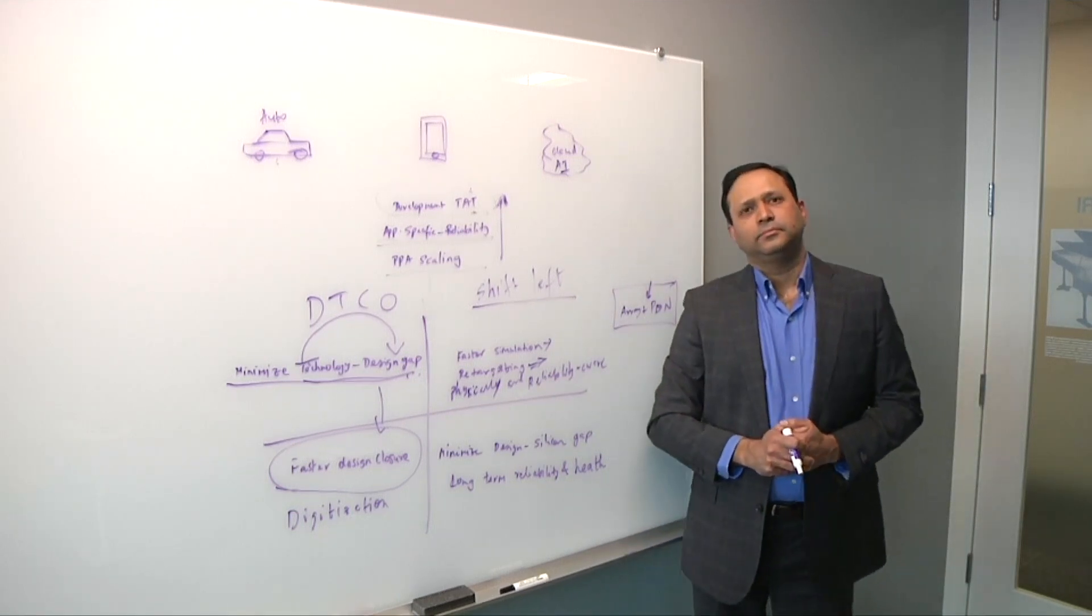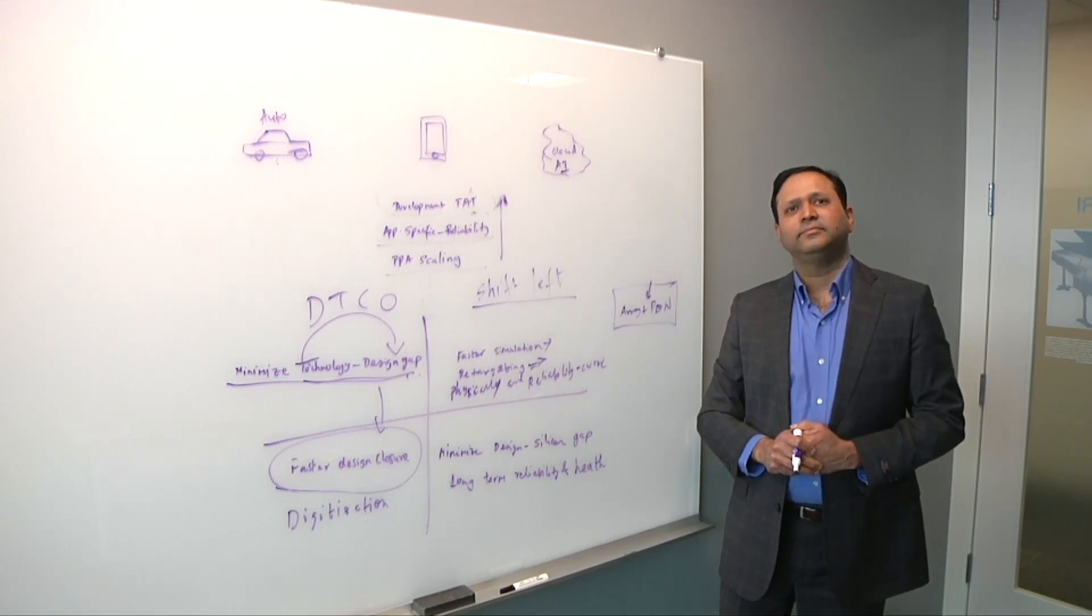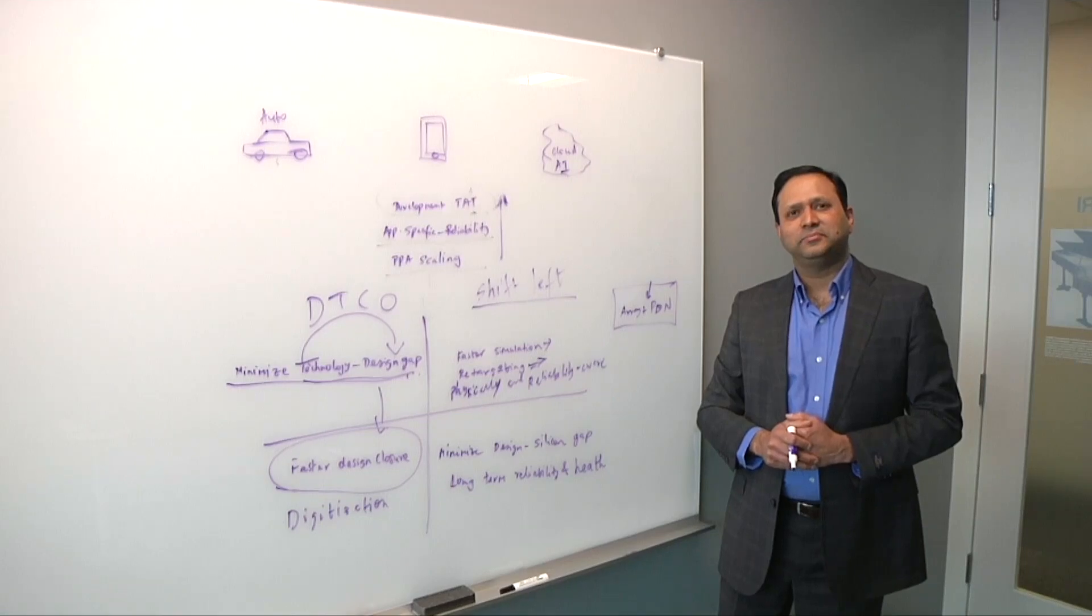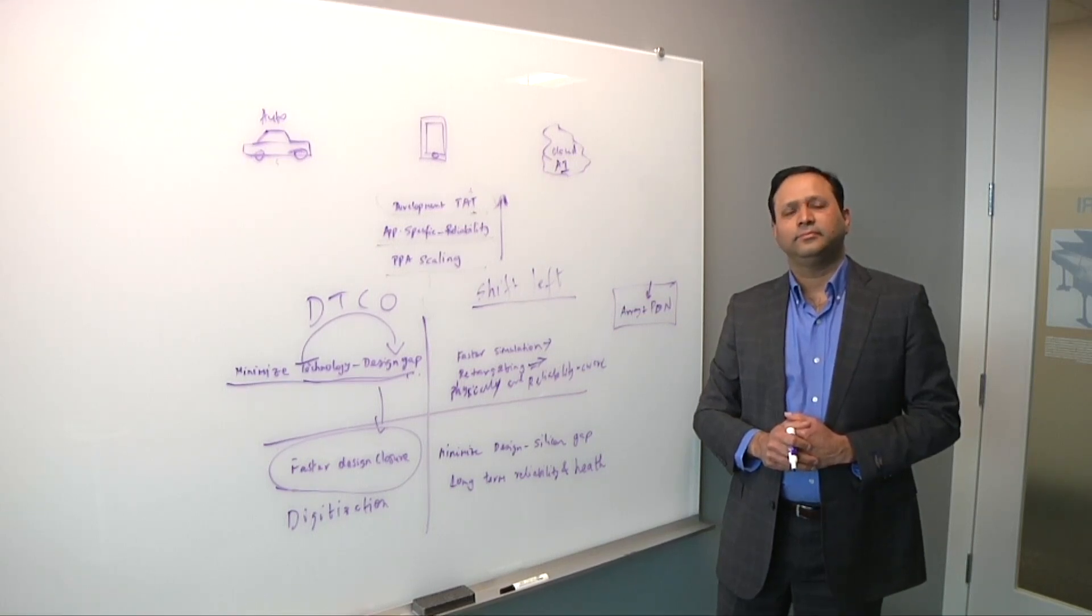Even within memory now, you now have 3D memory. So you've got certainly 3D NAND, which is now up, what, 256 layers or something like that. You also have 3D DRAM coming in. What's the impact of that? Are we dealing with the same kinds of problems as we are in heterogeneous 3D packages?